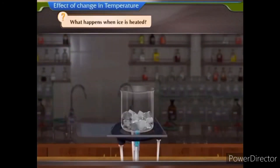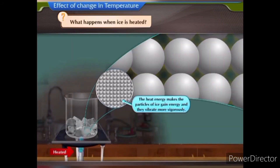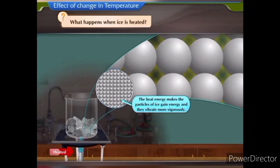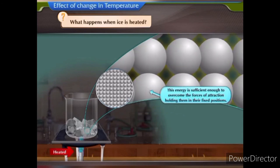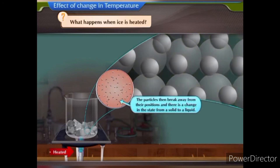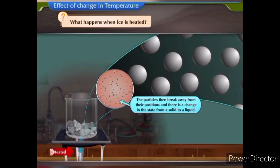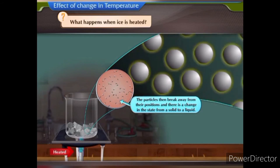Effect of change in temperature. What happens when ice is heated? When ice is heated sufficiently, the heat energy makes the particles of ice gain energy and they vibrate more vigorously. This energy is sufficient enough to overcome the forces of attraction holding them in their fixed positions. The particles then break away from their positions and there is a change in state from a solid to a liquid.